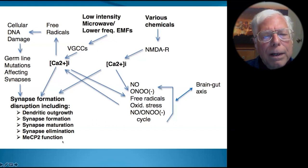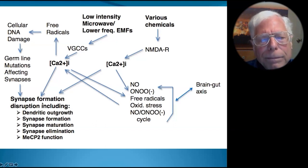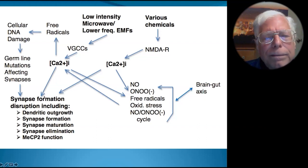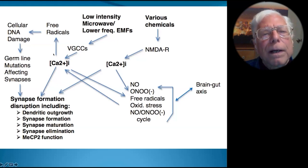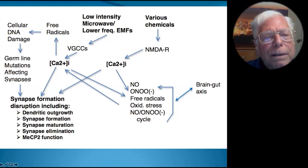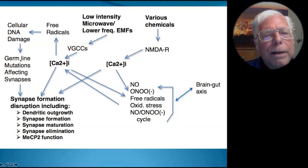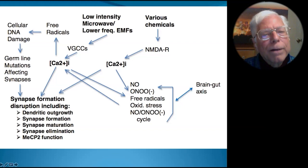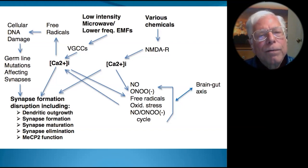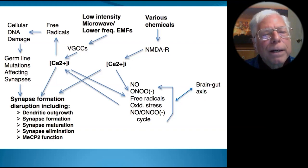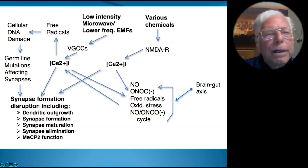In addition to the usual garden-variety types of autism, there are also what are called syndromic forms of autism. These are caused by germline mutations that affect the synapses — sometimes directly, sometimes indirectly. The different synapses in different parts of the brain are not all equally affected, so these genetically caused syndromic forms are not identical in their features to the more common types of autism.